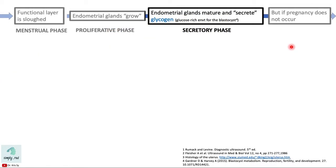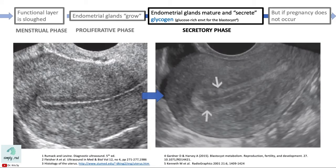After the glands grow, they are now ready to secrete glycogen — to create a glucose-rich environment for the blastocyst. This is now what we call the secretory phase. From a trilaminar appearance, we will now see increased echogenicity from the deeper functional layer due to the secretion of glycogen and leucine.